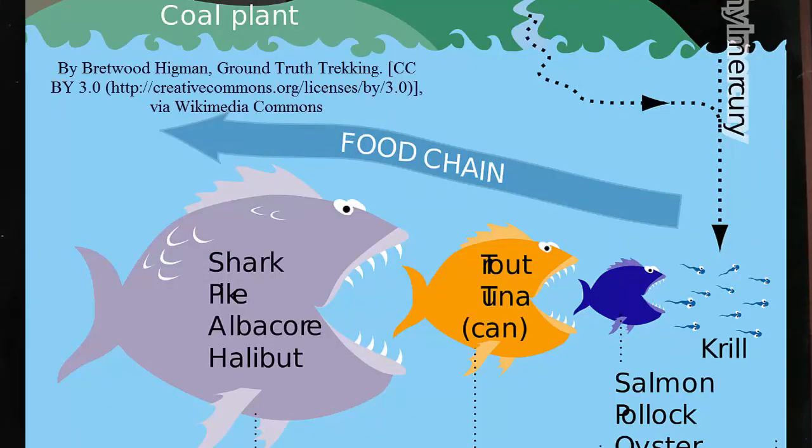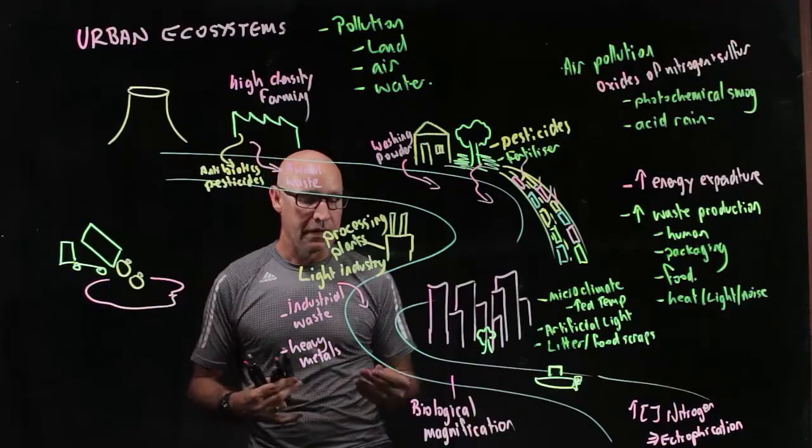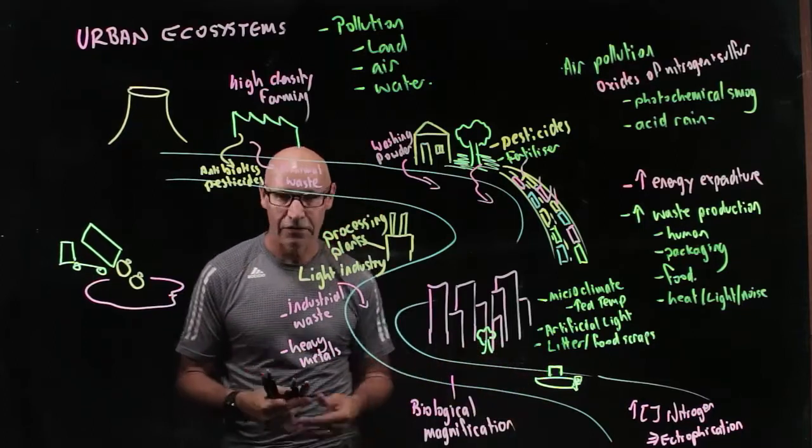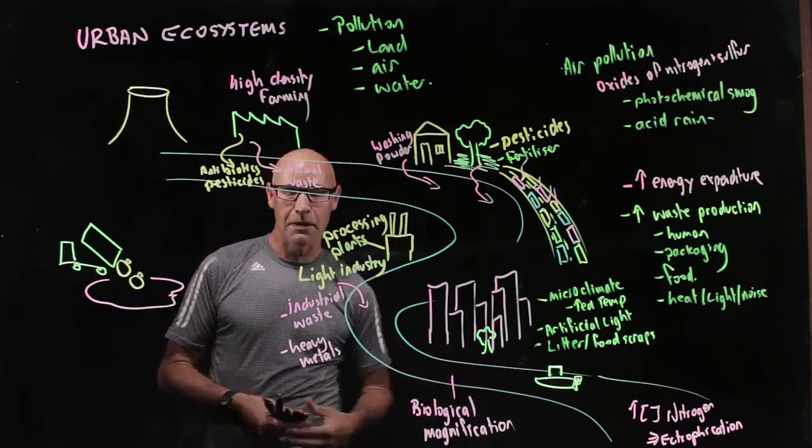So then when we harvest the large fish and eat those, we're getting a large amount of mercury and lead in our diet, which is tremendously damaging. It can cause birth defects. It can cause all sorts of negative impacts. So that's biological magnification.